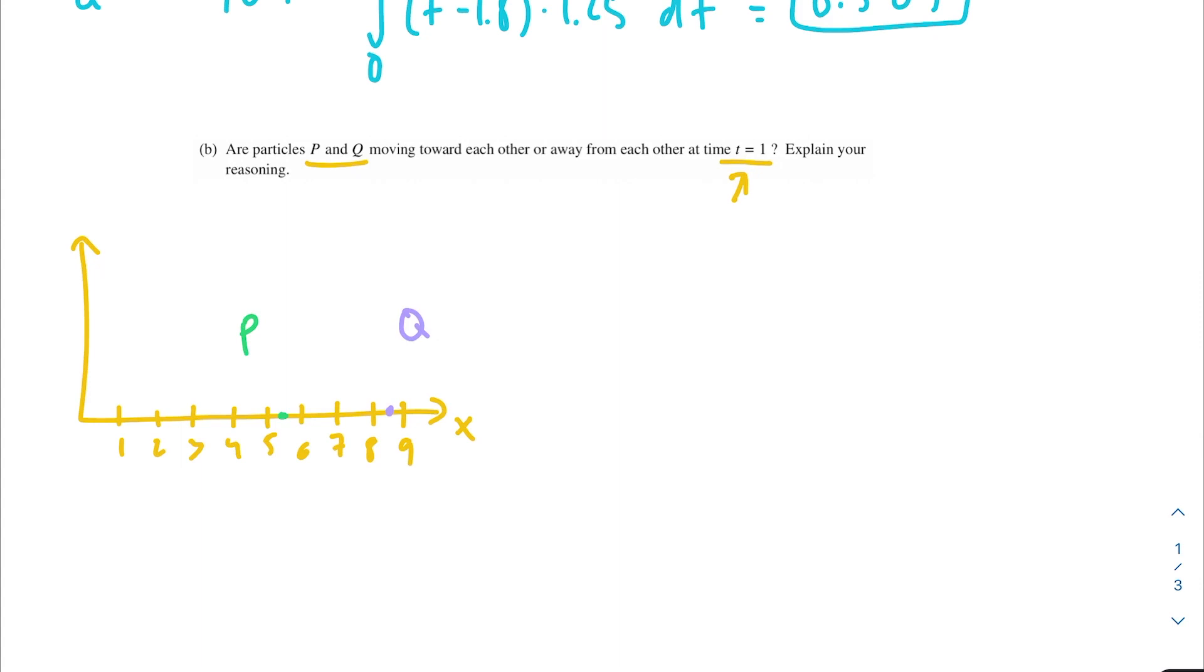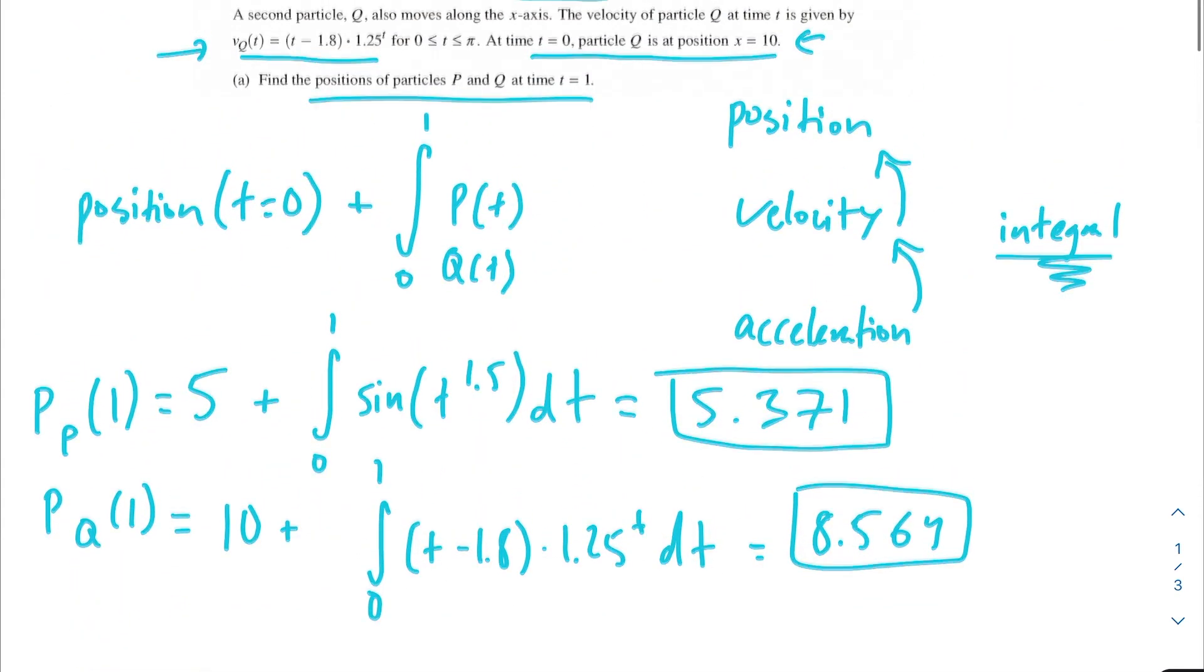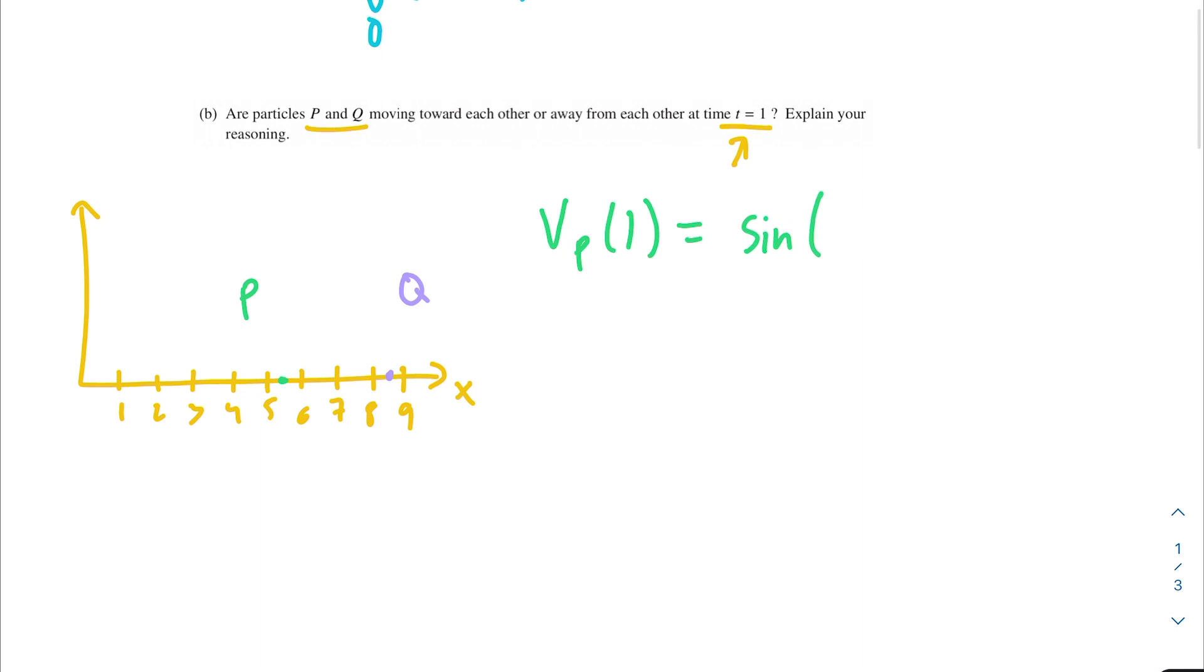Let's find the velocity for each of these points at time t equals 1. For P, it would be V_P(1) equals sine of 1 to the 1.5 power, which equals 0.841. And for Q, V_Q(1) equals 1 minus 1.8 times 1.25, which equals minus 1.